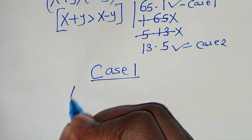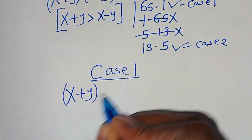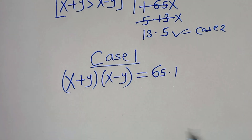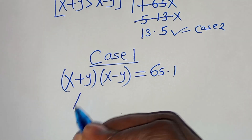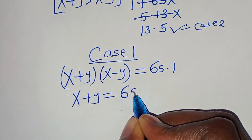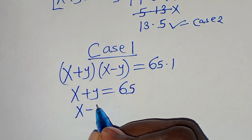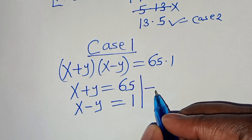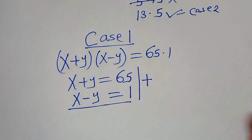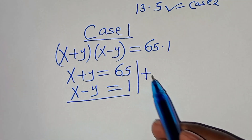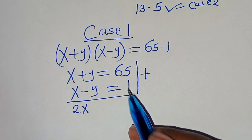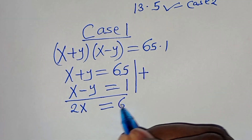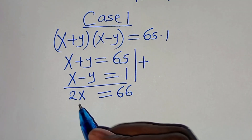In Case 1, we have (x + y)(x - y) = 65 times 1. So we have x + y = 65 and x - y = 1. These are a system of two linear equations. Adding the two equations: x plus x gives 2x, and y minus y cancels, giving 65 plus 1 equals 66.